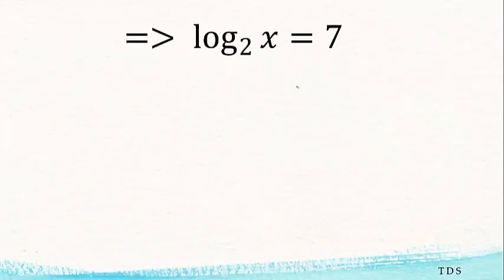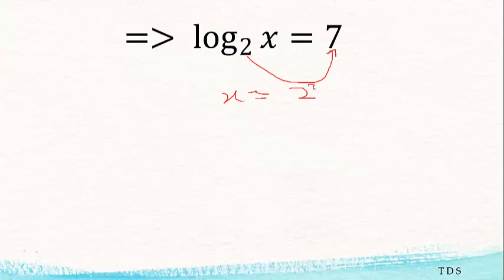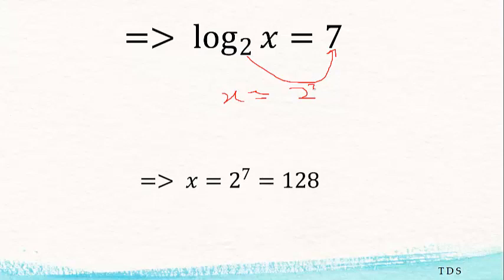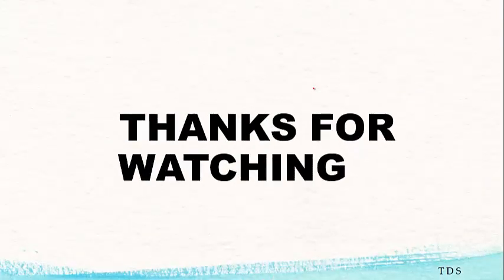Don't forget the definition of log — this converts back so we have the answer. The value of k is 7, so the answer for log of 125√5 to base 5 is 7. And note that 2 to the power 7 is 128. Thank you for watching.